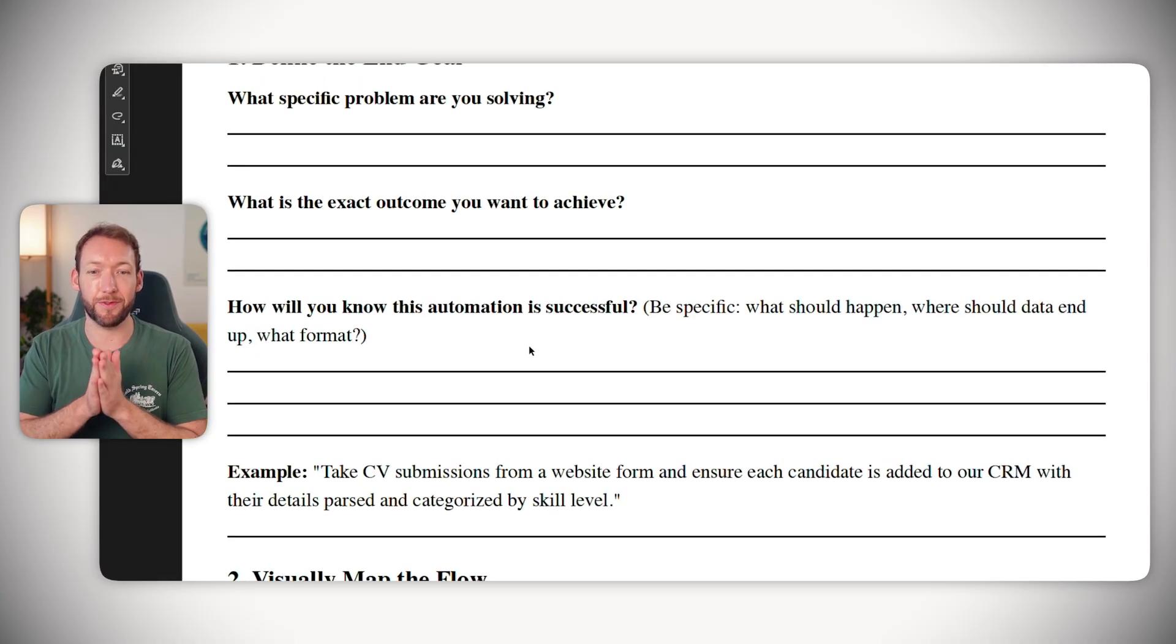And how will we know that this automation is successful? We've got some prompts here - what should actually happen? Where should data end up? What format? We're going to link this directly to the outcomes that we want to achieve. So we will know this is successful if there is zero manual intervention from the HR department every time we put a job up. So it needs to take all that information and actually get us to a short list of candidates, all their details in the CRM and categorized by skill level. So we're going from two hours a day to zero manual intervention.